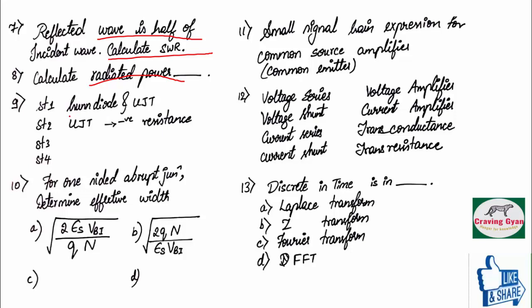First statement was based on gun diode and UJT, which is acting like an amplifier. True. And UJT is having negative resistance. Yes. UJT is having negative resistance. Hence, it is acting like a relaxation oscillator.